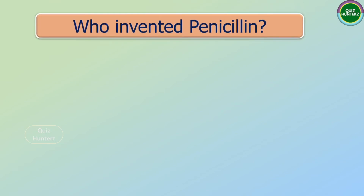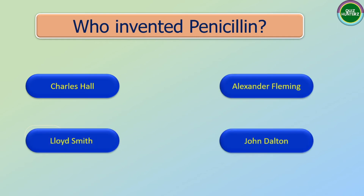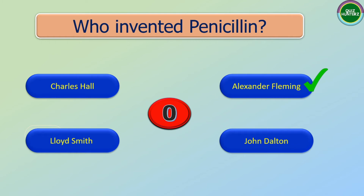Next question: Who invented penicillin? The options are: Charles Hall, Alexander Fleming, Liot Smith, and John Dalton. And the correct answer is Alexander Fleming.